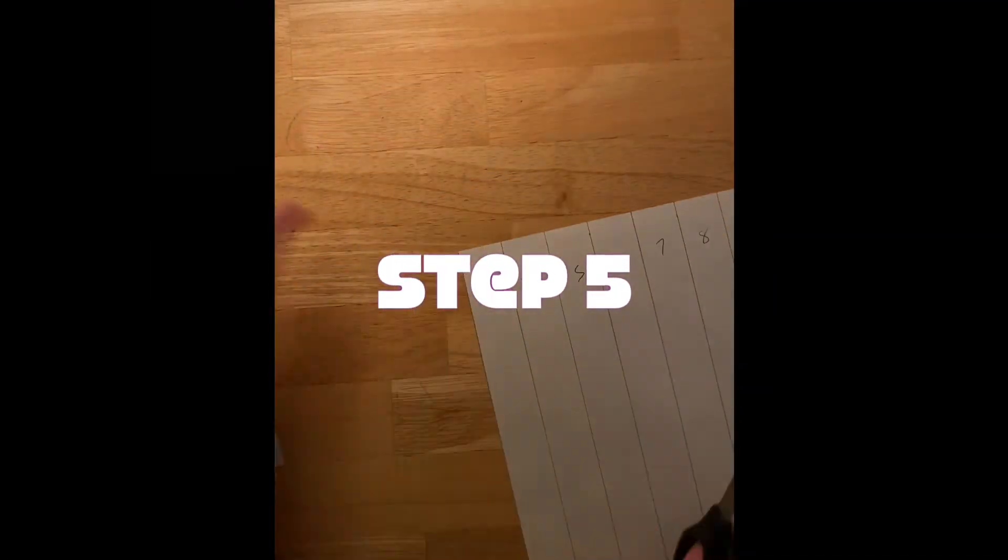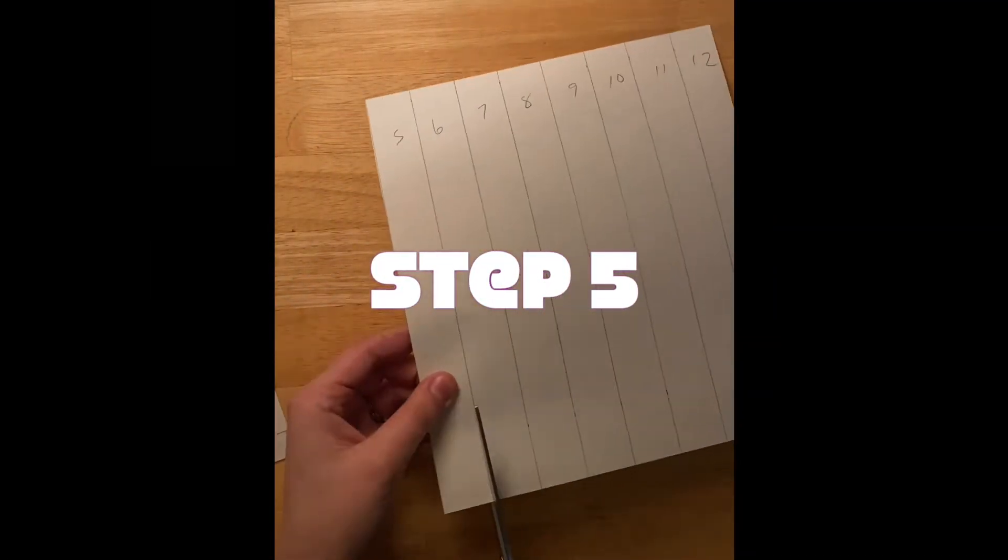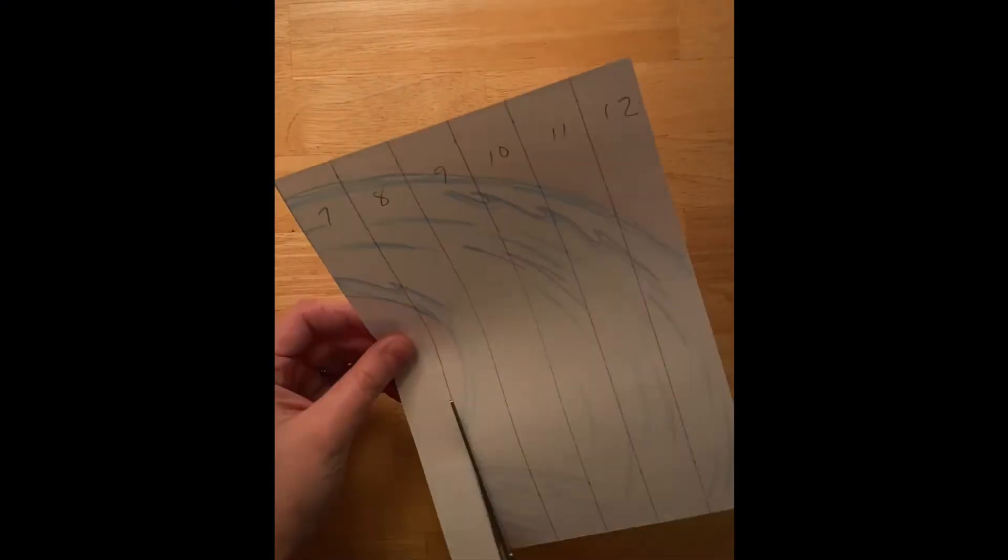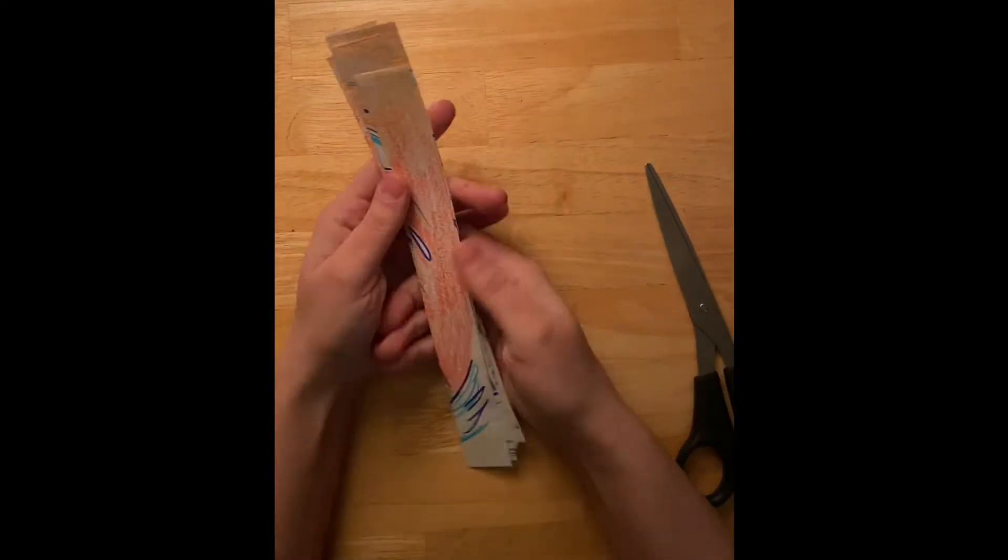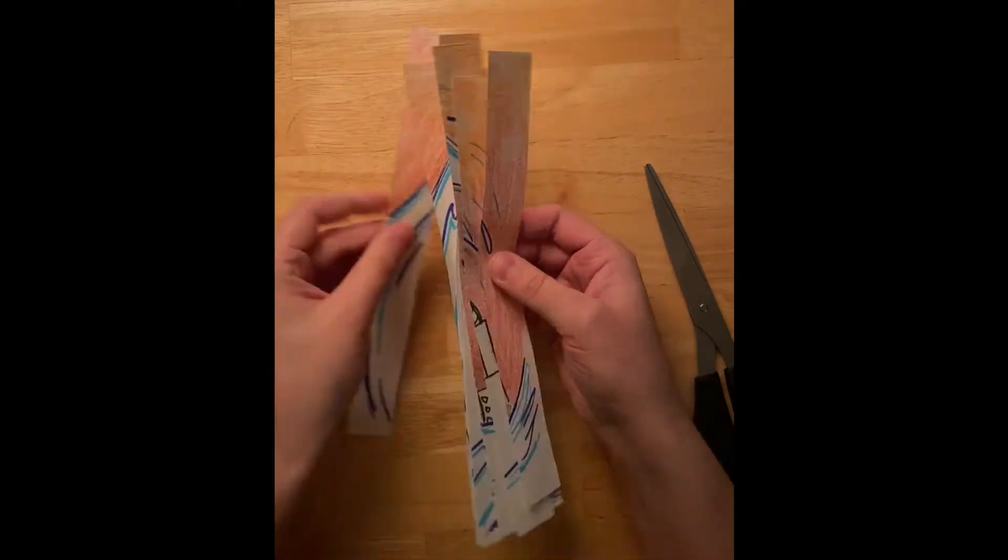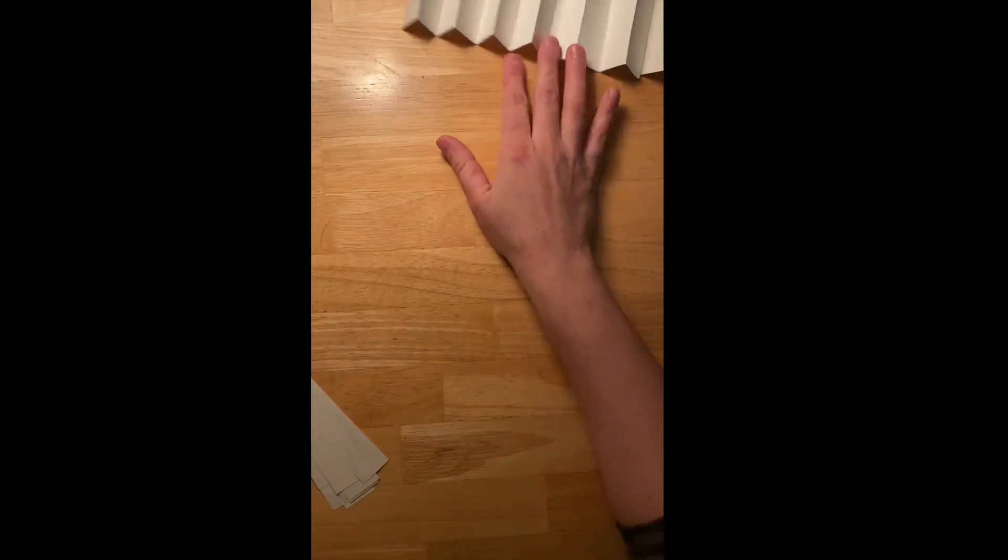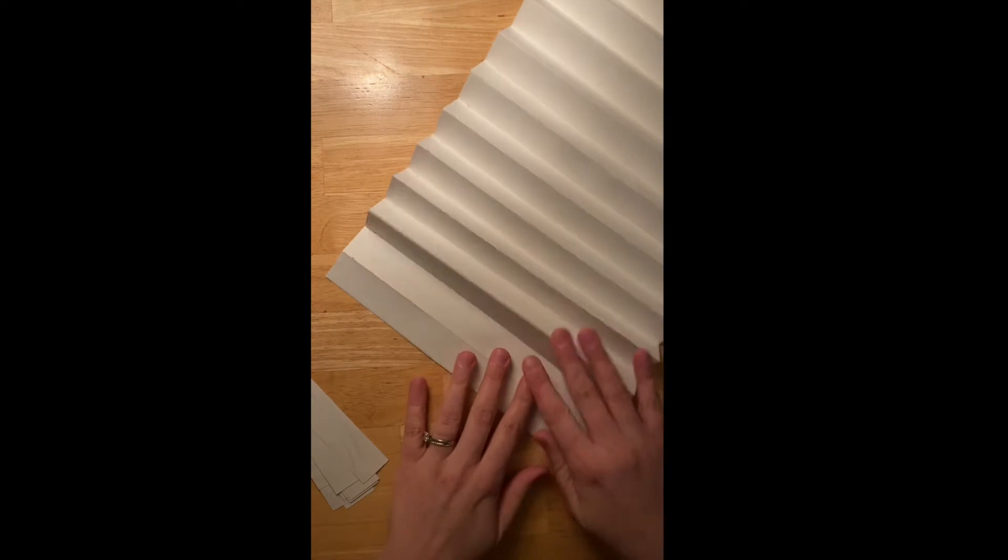Step five, as much as this might pain some of you, cut those beautiful drawings into one inch strips carefully along the lines you made. Step six, now we finally get to see this anamograph coming together. Take the one drawing that you now have cut into strips.